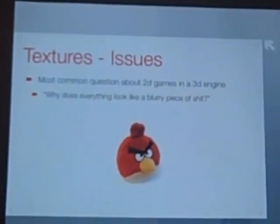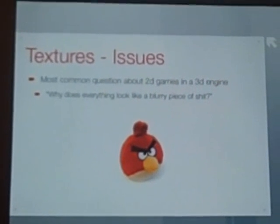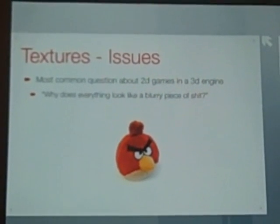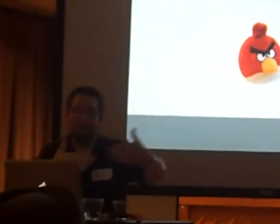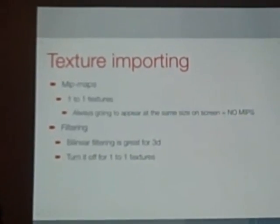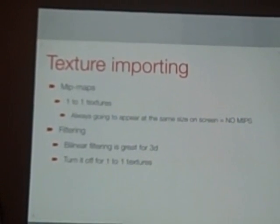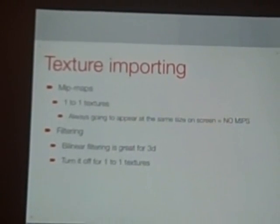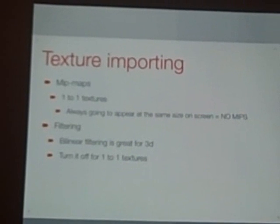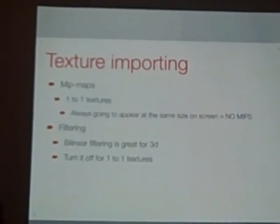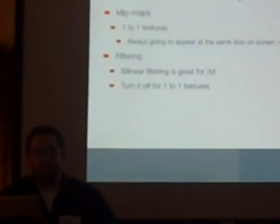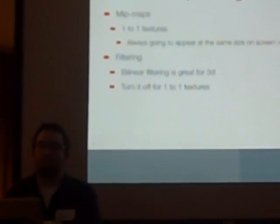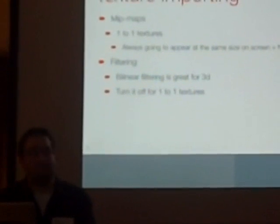I'm going to cover some issues with textures in a 2D game. The most common question we get about 2D games in a 3D engine is why does everything look blurry. That's what will happen if you just throw a bunch of textures on planes in front of a camera. First, make sure your textures are imported properly. If you have a texture that's supposed to be pixel-perfect, turn off mipmaps. Anything not going to be scaled on screen — turn off mips. Same with filtering: bilinear filtering interpolates pixels, so turn that off for a one-to-one texture, otherwise you'll get that blurry effect.